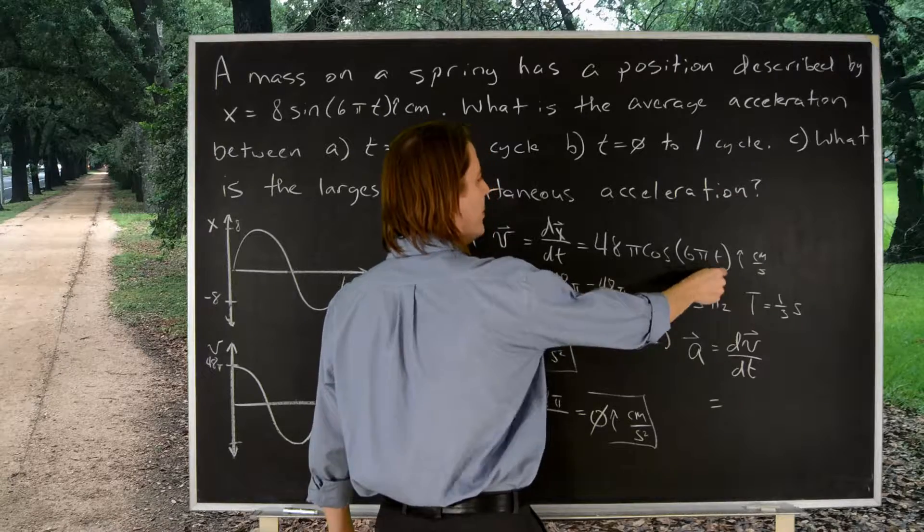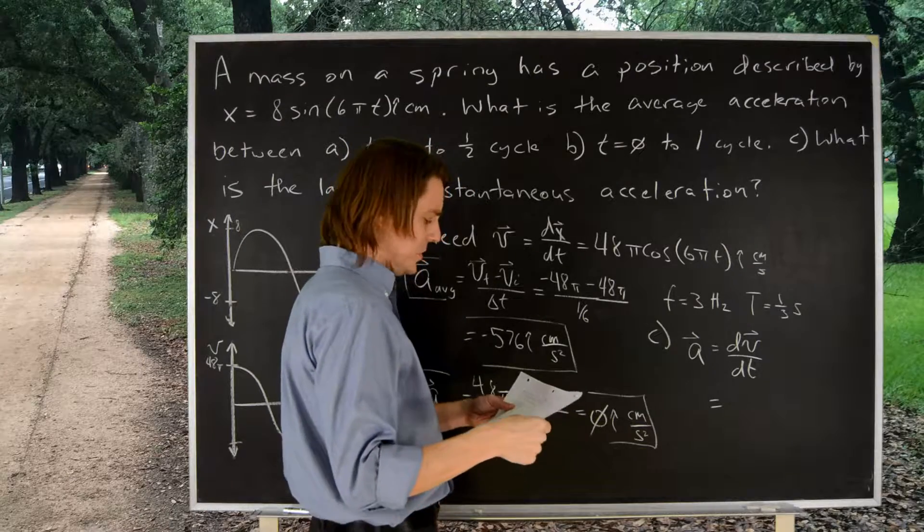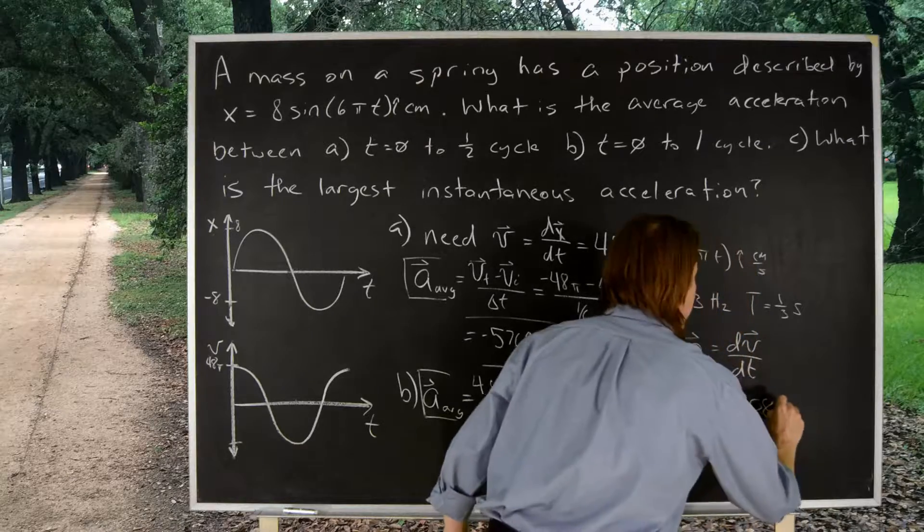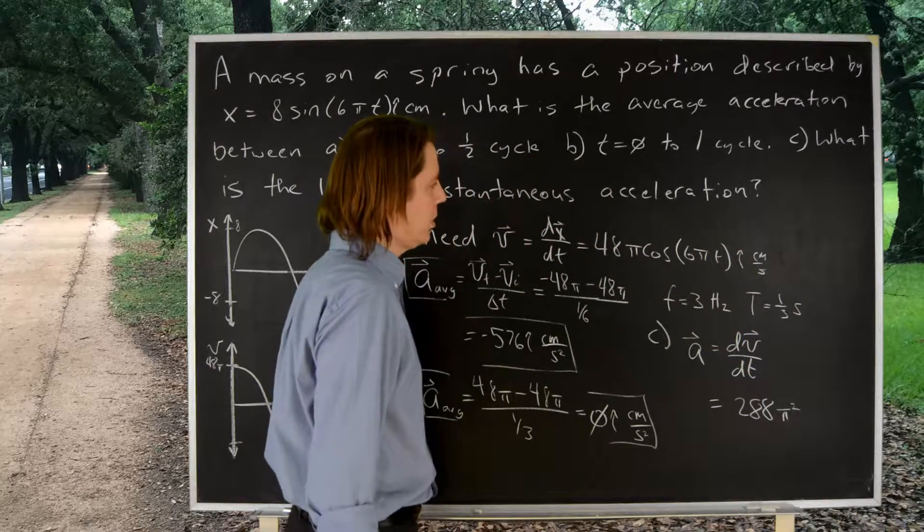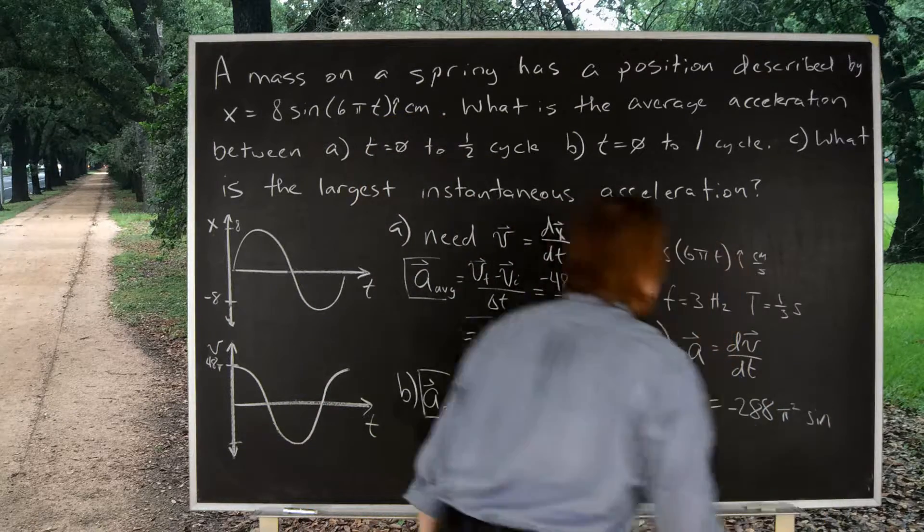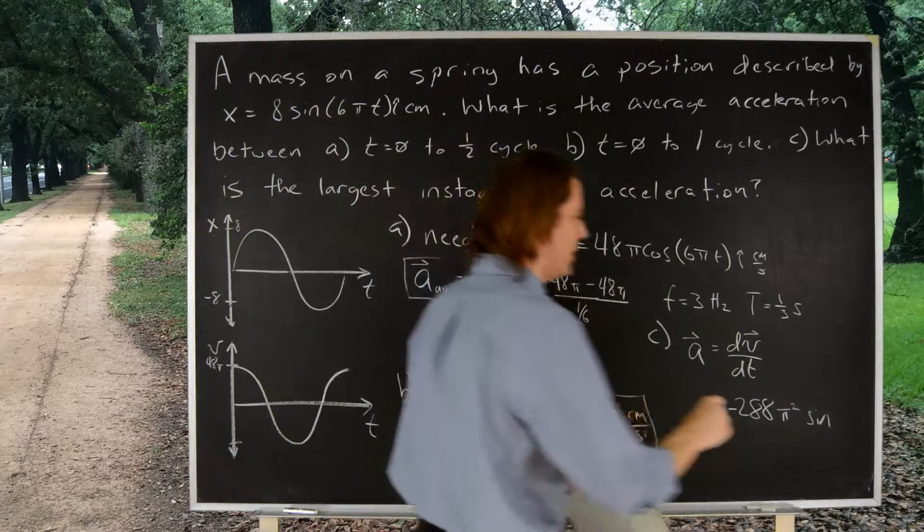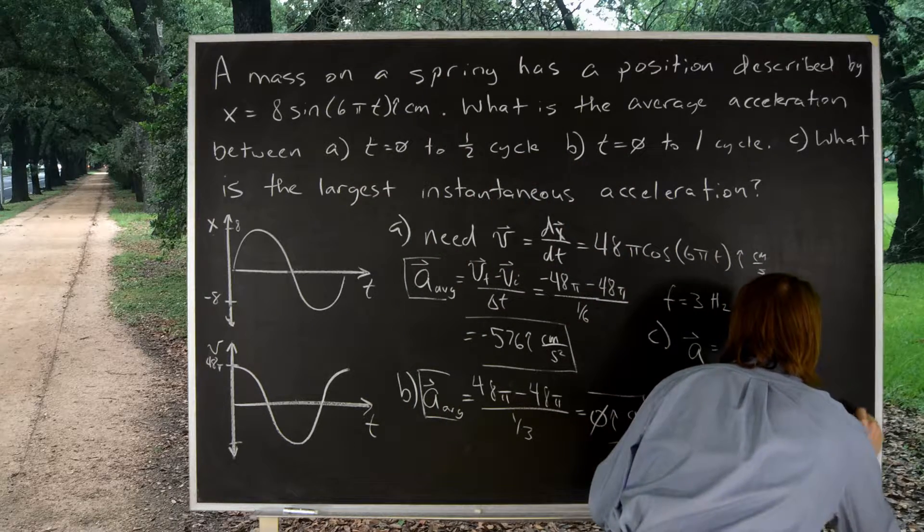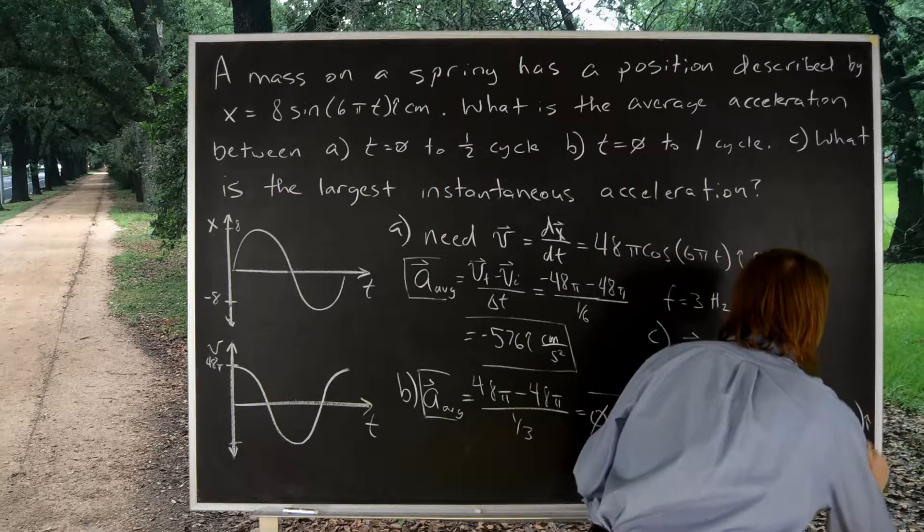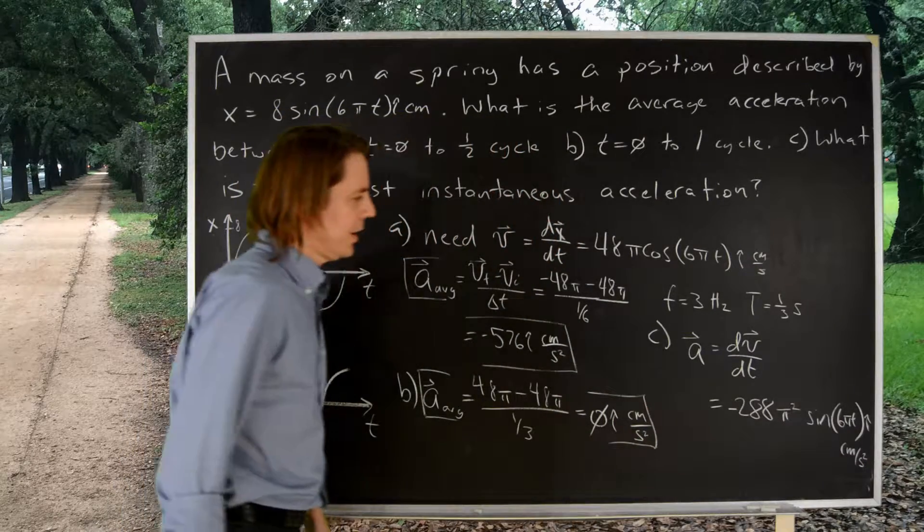So, you pull the 6 pi, the derivative of this part with respect to time, out. The 6 pi comes out, multiplies the 48 pi. So, 6 times 48 is 288, and then you've got pi squared, because there were 2 pi's there. And, cosine becomes negative sine when you take its derivative. Negative 288 pi squared sine, and then the inside stays the same, 6 pi t. And, that is i-hat centimeters per second squared. There's your acceleration, instantaneous acceleration.